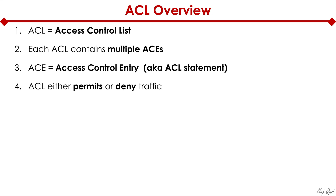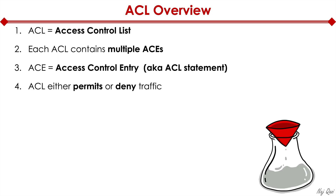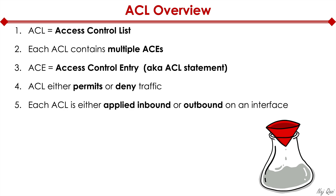An ACL either permits or denies traffic — that's a very basic function of an ACL. As you can see in the picture here, an ACL is analogous to a coffee filter. If you think of a coffee filter, it traps the coffee grounds but allows the flow of liquid to go through. Similarly, ACLs filter traffic in our network.